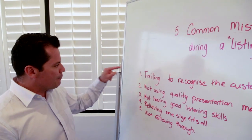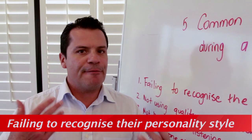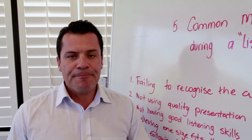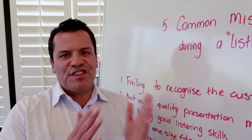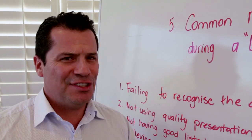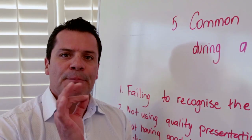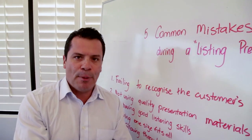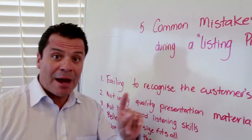Number one: failing to recognize the customer's personality style. Generally there are four personalities — either they're a Driver, which is the D personality; the I, which is the Influencer; the S, which is Steadiness; or the C type, which is Compliance. You need to recognize their style. If a guy wants to get to the point, don't fluff around — he's a driver, get to the point.